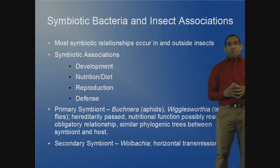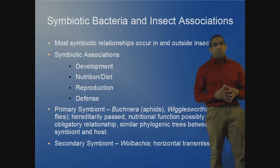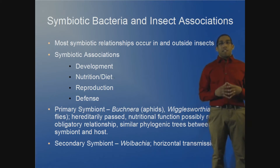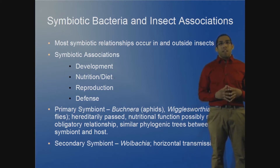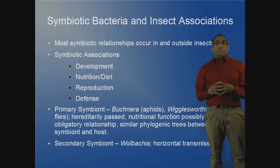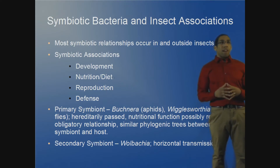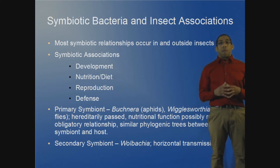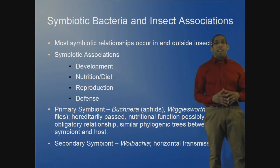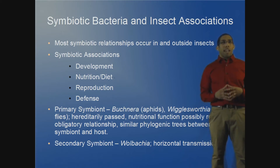Focusing back into symbiotic bacteria and their insect associations — insects are a very wide kingdom, and there are many insects that require symbiosis to develop. Certain associations include development, which I'll cover with Wolbachia shortly, and nutrition with Bucknera. There are also associations involving reproduction and defense.